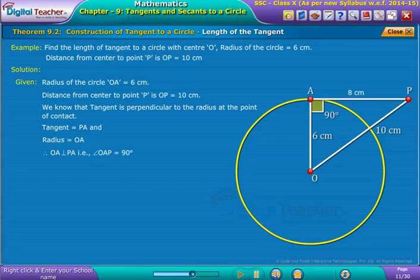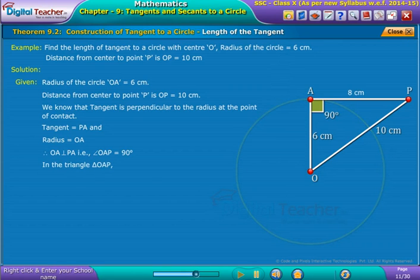That is, angle OAP is equal to 90 degrees. In the triangle OAP, using Pythagoras theorem we obtain equation 1 as shown on screen.